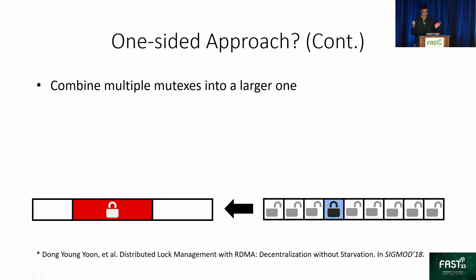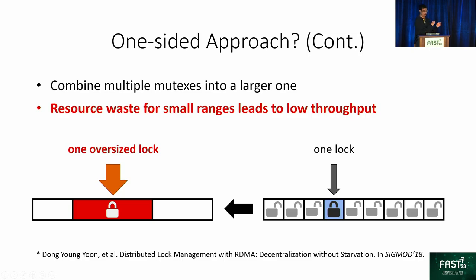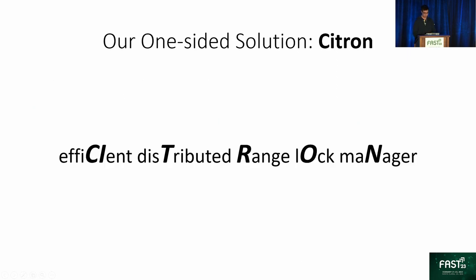Conversely, to avoid having to lock so many times, we can combine multiple mutexes into one. This avoids the latency problem, but a throughput problem arises: if we only want to lock a small range, we still acquire an oversized lock, resulting in waste and possibly false lock conflicts, which lowers overall throughput. To enjoy the performance benefits of one-sided RDMA while avoiding the drawbacks of these trivial approaches, we designed Citron.